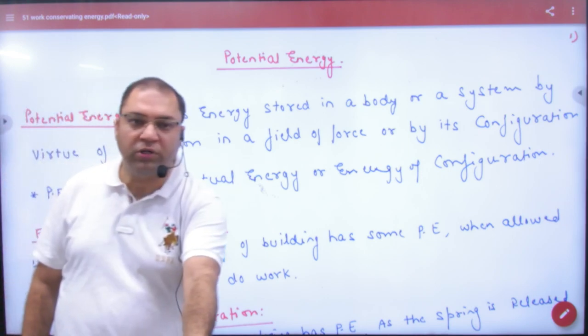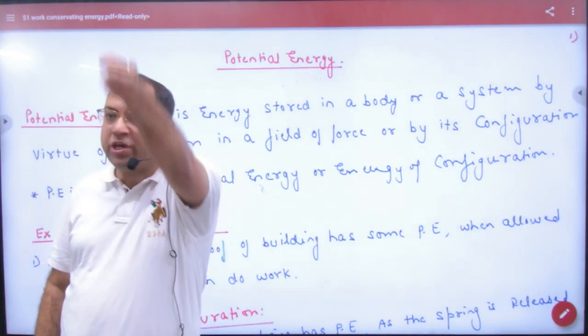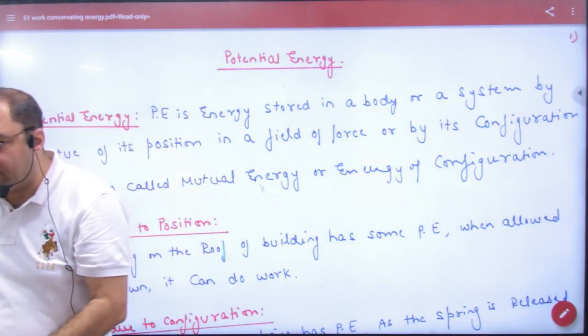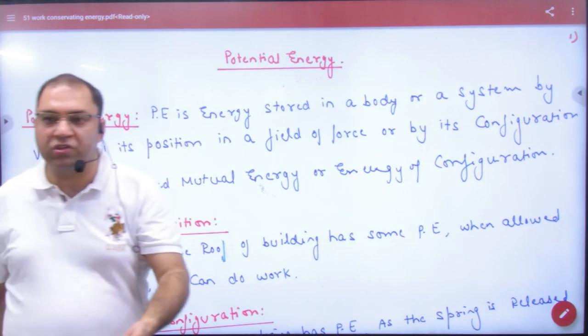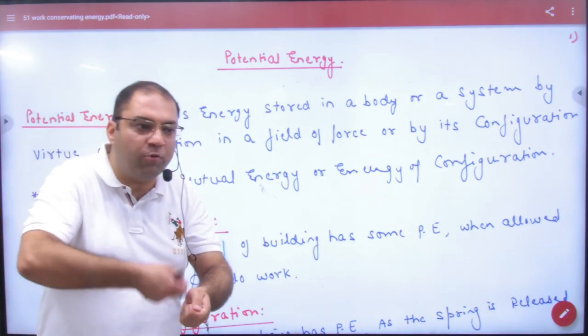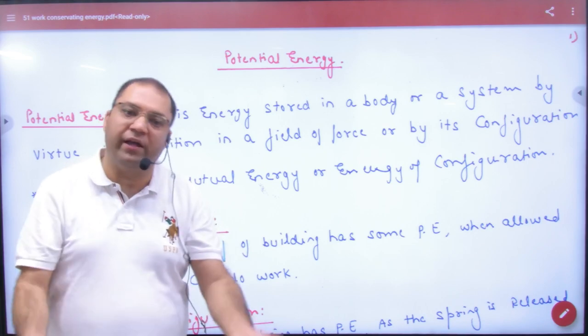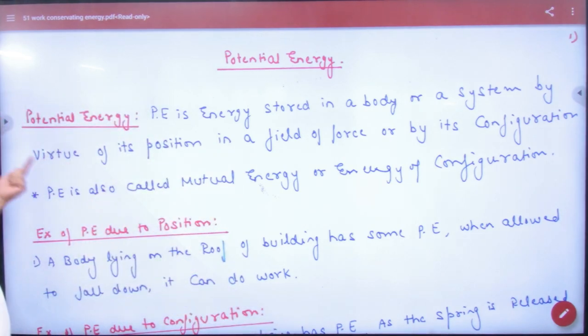Position means you have taken the object to a certain height and the position changed, resulting in gravitational potential energy. Configuration means a spring. When the spring is compressed or extended, energy is stored. These are two types of energy.